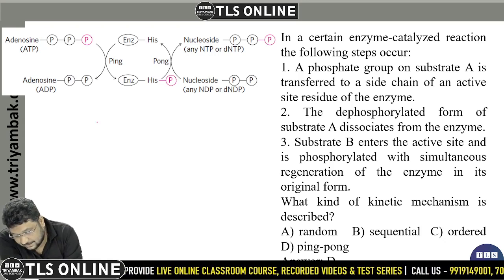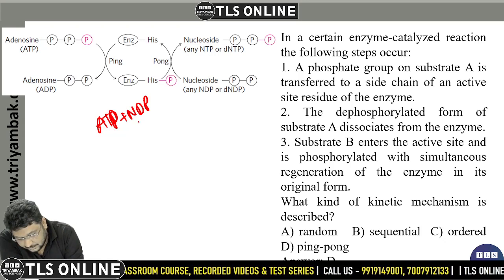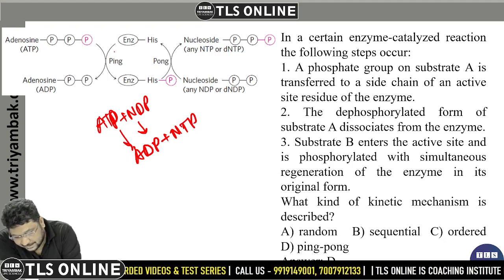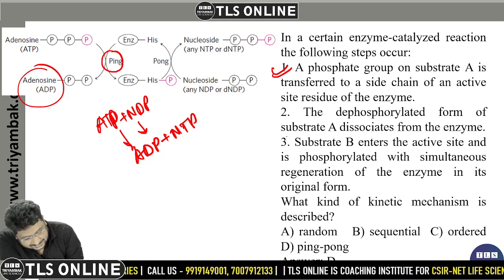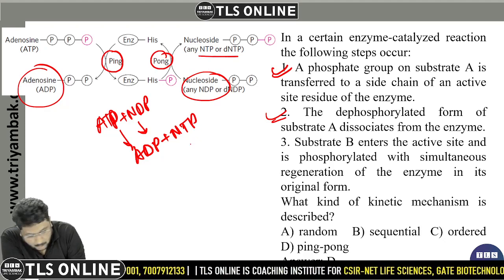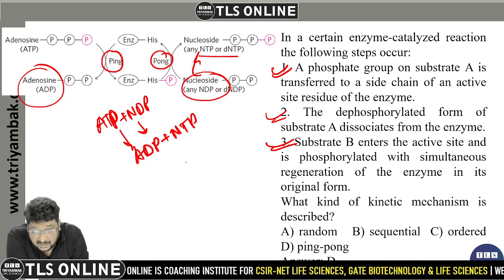This is an example where ATP to NDP equals ADP to NDP. So this is a ping reaction — this is the first one and this is the second one — and a pong reaction, that is NDP. It is a pong where the substrate is regenerated into NDP.